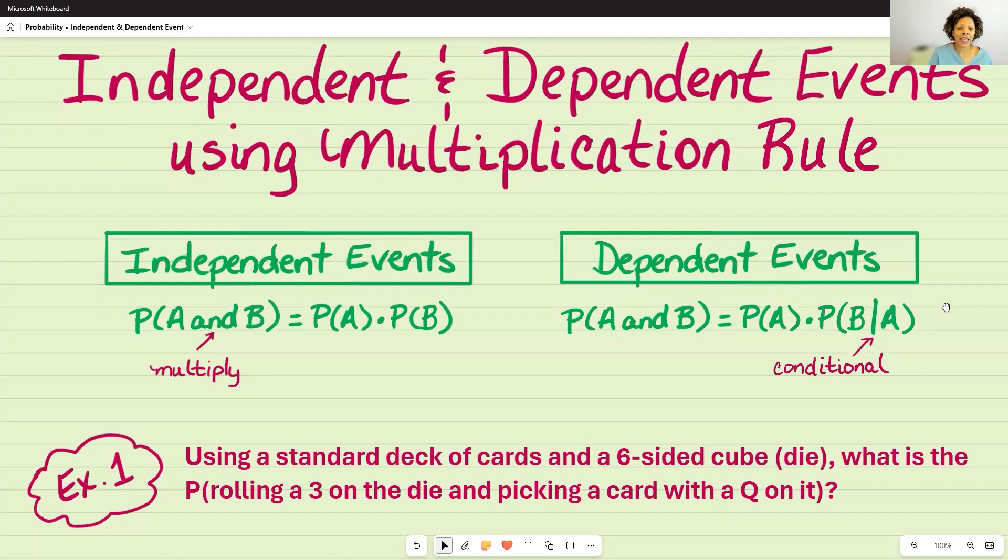As you can see, I have an independent event formula, which is the probability of A and B, where AND is used in the word problem. That means that you're going to multiply. And so that's going to equal the probability of A times the probability of B.